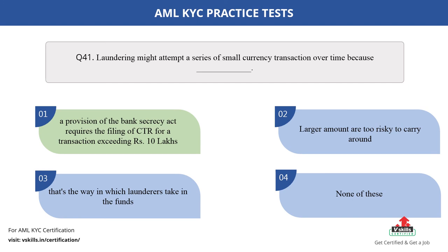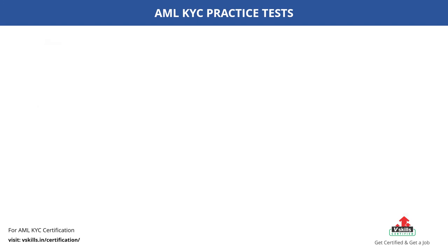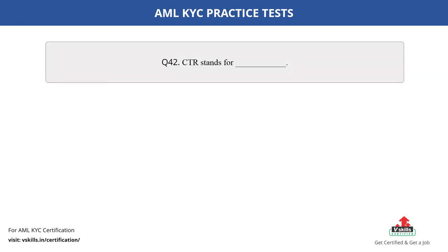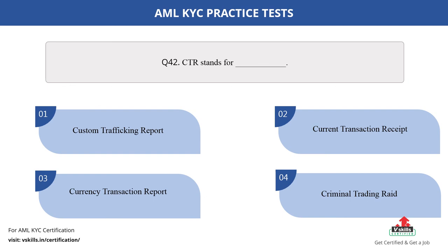Question number 42. What does CTR stand for? The options are: A. Custom trafficking report; B. Current transaction receipt; C. Currency transaction report; D. Criminal trading raid. The correct answer is option C.